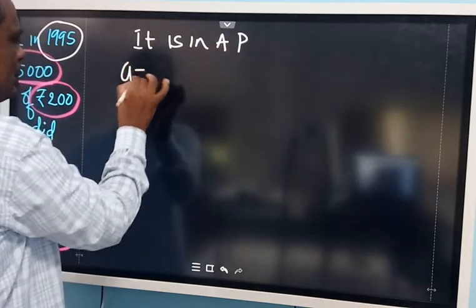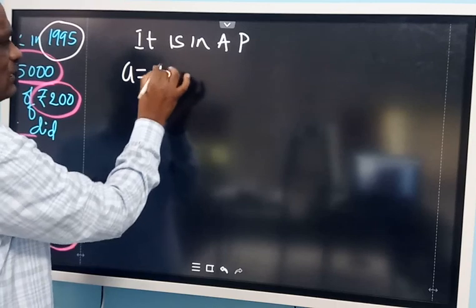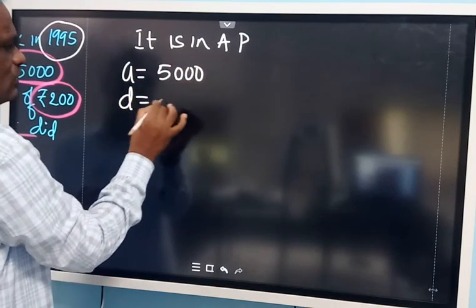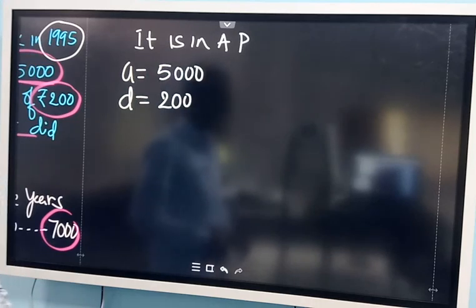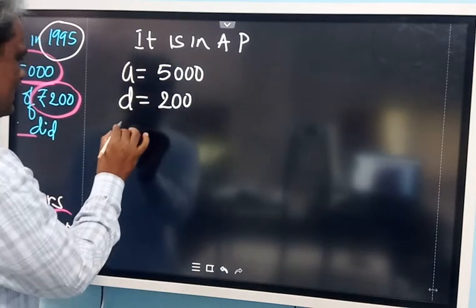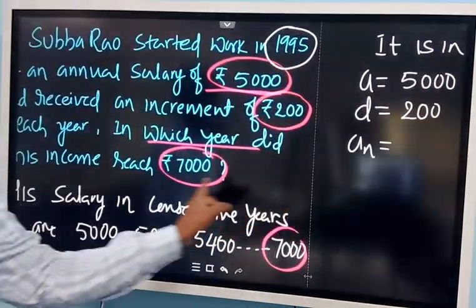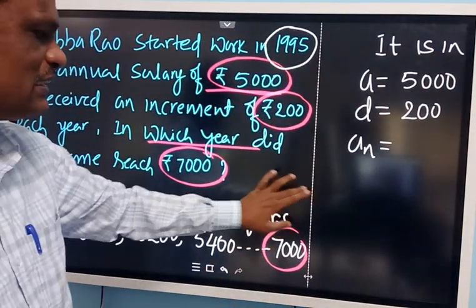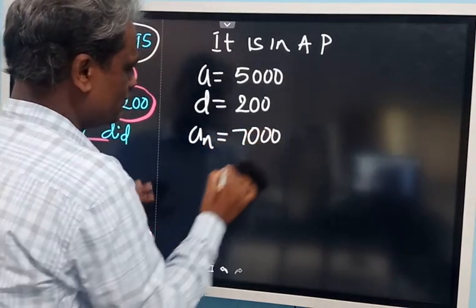So with the first term A equal to Rs. 5000, and common difference D equal to 200 — because every year it increases by 200 Rs., therefore common difference is 200. The nth term AN is equal to 7000, so the last term is 7000. Let us write AN = 7000.